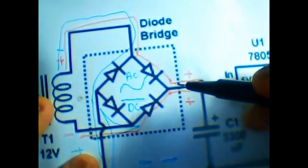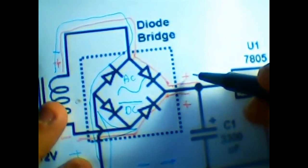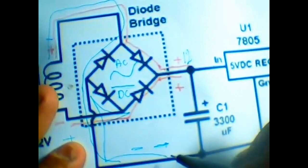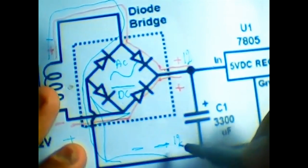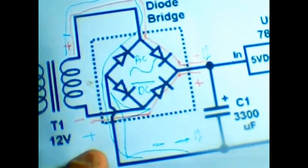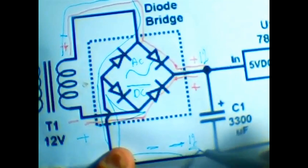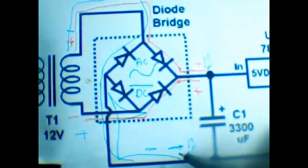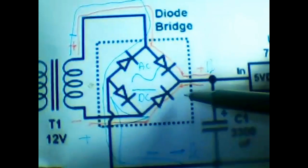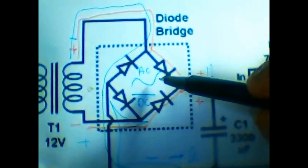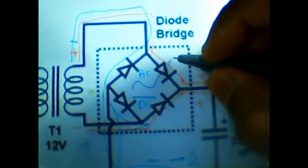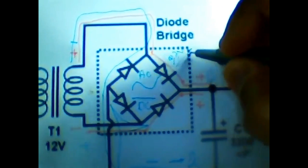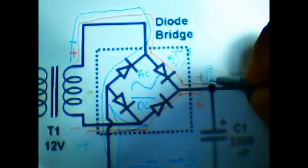Here we have a constant of plus 12 volts and minus 12 volts. Actually it's not always the same voltage because running through the diodes will consume some power — about 0.7 volts per diode.